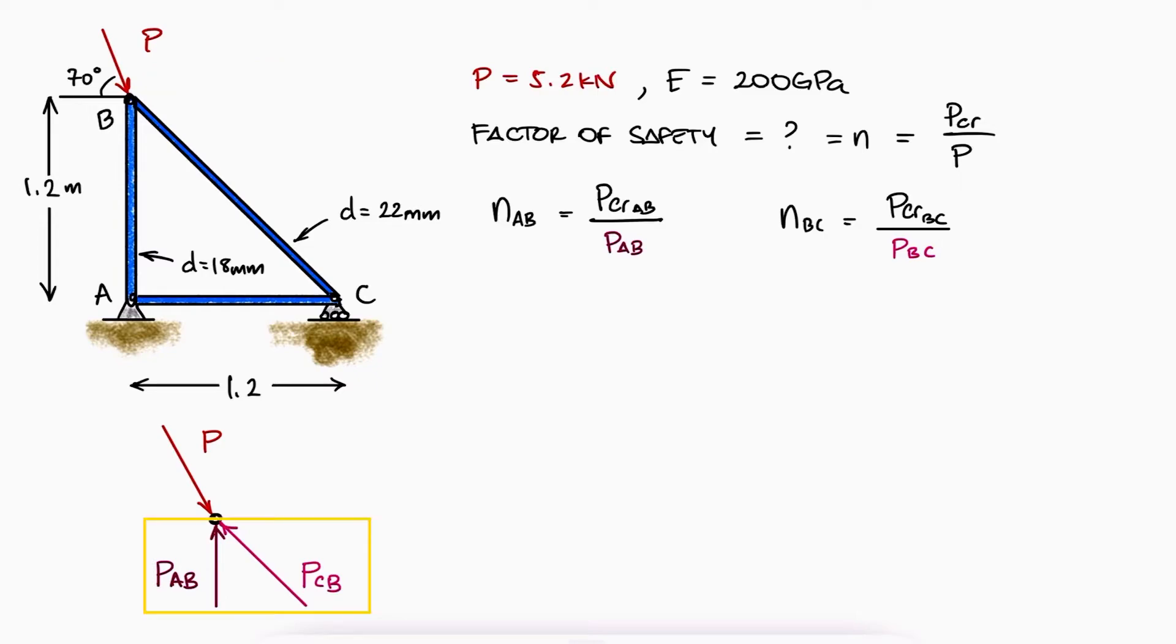Internal loads of members are usually assumed to be in tension so that when solving for their values, positive is tension and negative is compression. However, since this is a buckling problem and we know that these members are under compression, the force vectors for AB and CB already reflect that compression.